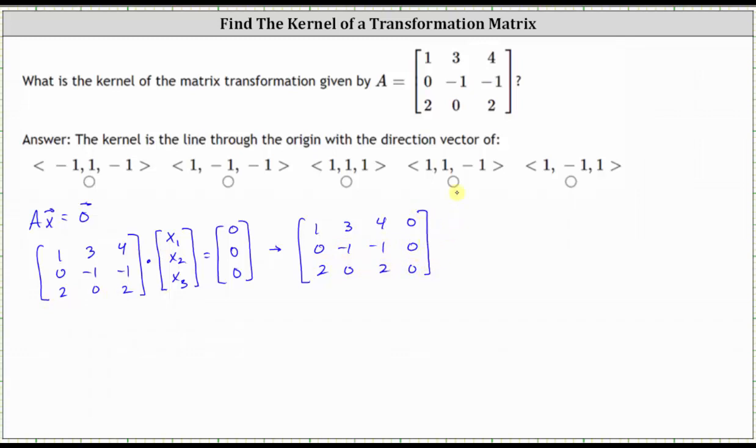The next step is to write the augmented matrix in reduced row echelon form, which I've already done to save time. The first row is 1, 0, 1, 0; the second row is 0, 1, 1, 0; and the third row is a row of zeros.